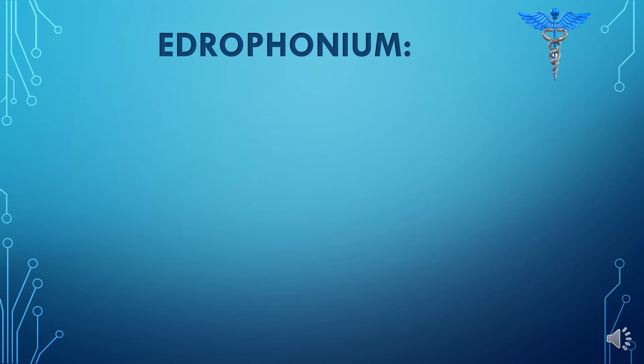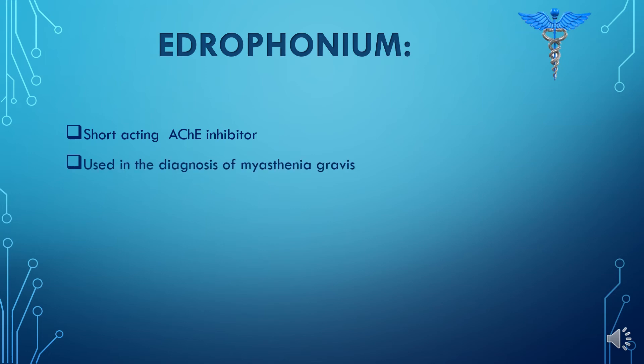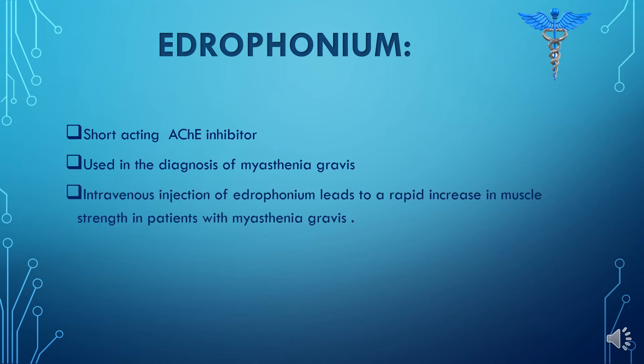Edrophonium can be used in the diagnosis of myasthenia gravis, which is a chronic autoimmune disorder in which antibodies destroy the communication between nerves and muscles, resulting in weakness of skeletal muscles. If you inject edrophonium intravenously, it will lead to a rapid increase in muscle strength in patients with myasthenia gravis.